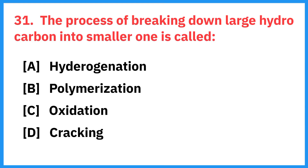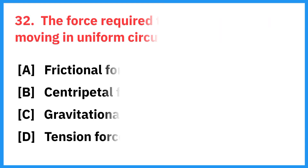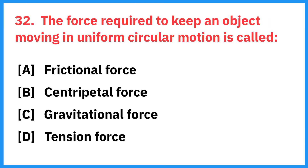The process of breaking down large hydrocarbons into smaller ones is called? Right answer is cracking. The force required to keep an object moving in uniform circular motion is called? Right answer is centripetal force.